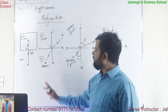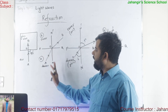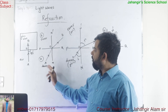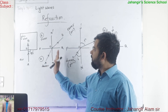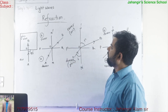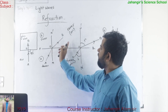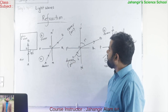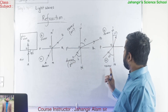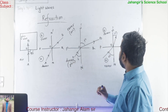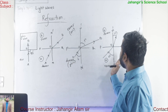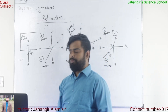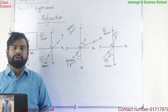When light ray passes from denser to rarer medium obliquely, then it goes away from the normal — it bends away from the normal. On the other hand, when light passes from a rarer medium to a denser medium obliquely, then it bends towards the normal. This phenomenon is known as refraction.